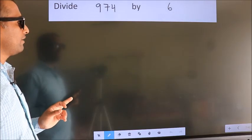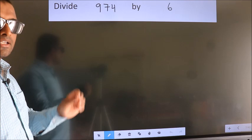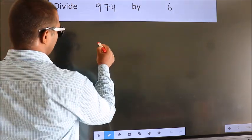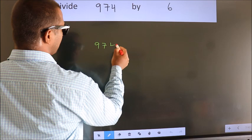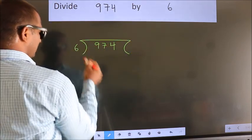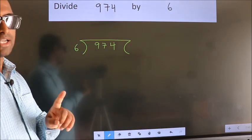Divide 974 by 6. To do this division, we should frame it in this way. 974 here, 6 here. This is your step 1.